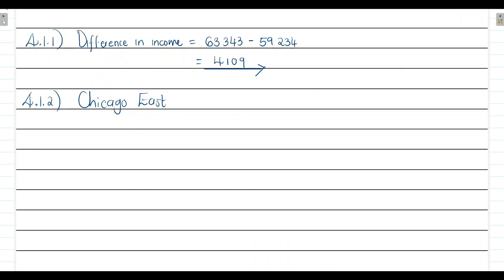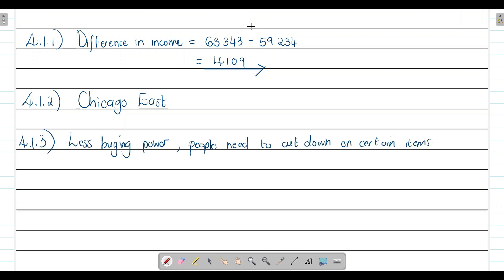Please note that any reasonable answer will be accepted. If you explain that living above your means leads to taking loans to cover additional expenses and therefore accumulating debt, that will be correct. The memo answer is: having less buying power, therefore you need to cut down on certain items.